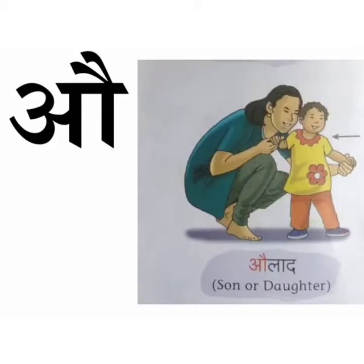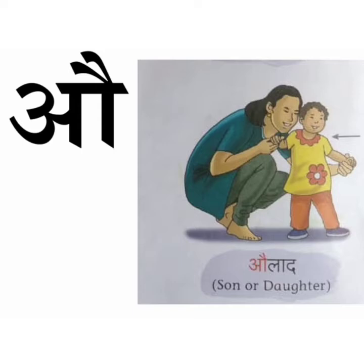AU se AULAD means son or daughter — children. You are the son or daughter of your parents. If you are a boy, then you are a son. If you are a girl, you are a daughter of your parents.